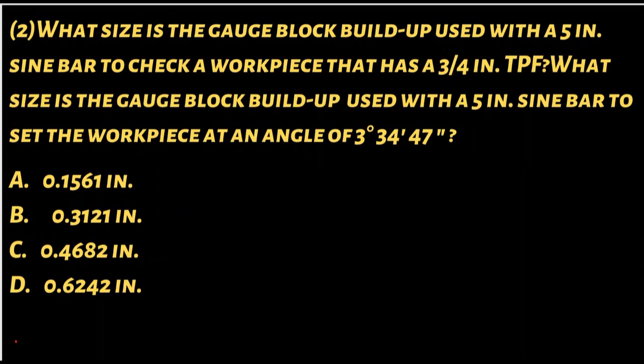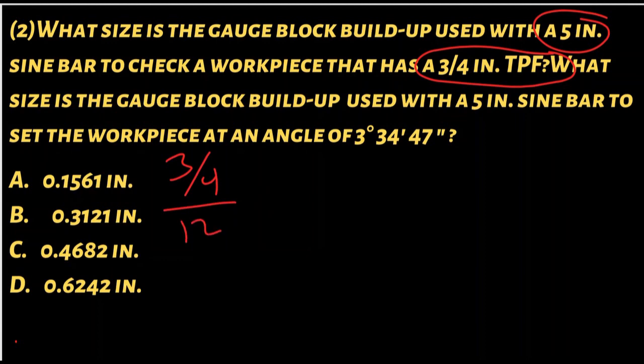There's a second way of doing this because they gave us enough information. We know that it's three-quarters taper per foot and we want to build a sine up over 5 inches. So we can say three-quarters over 12 equals X over 5.